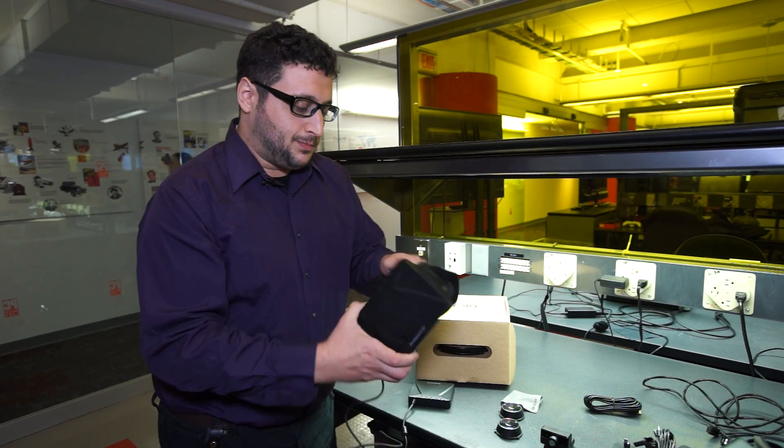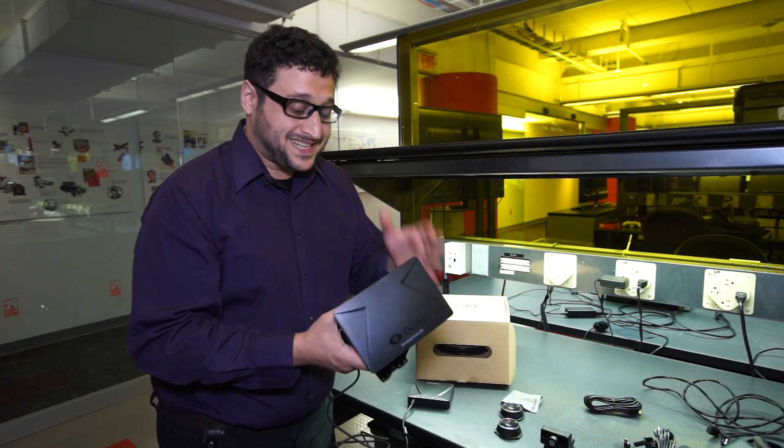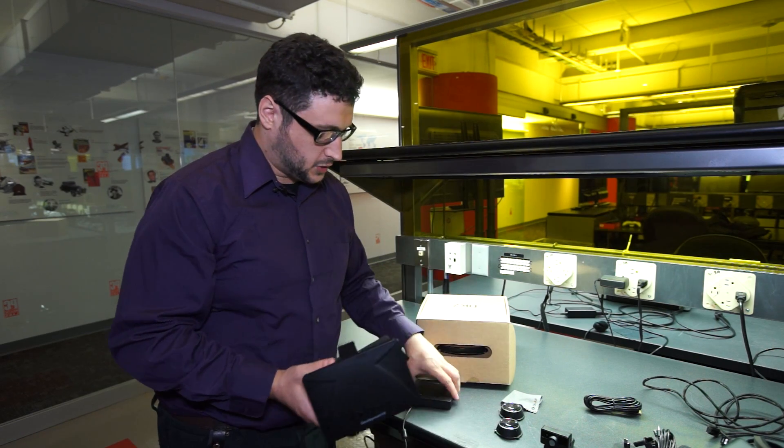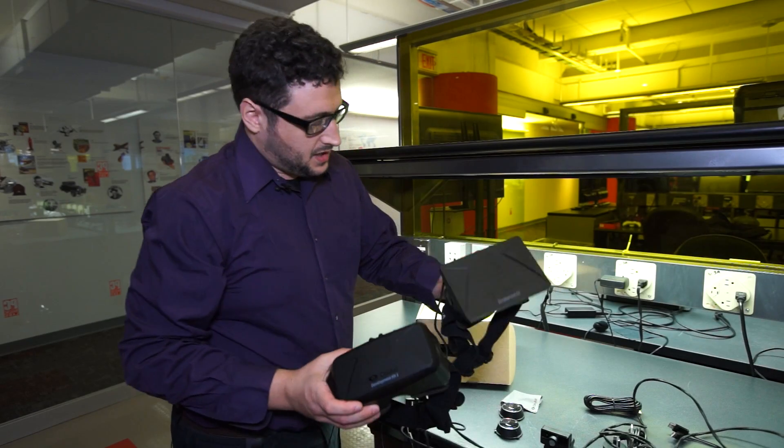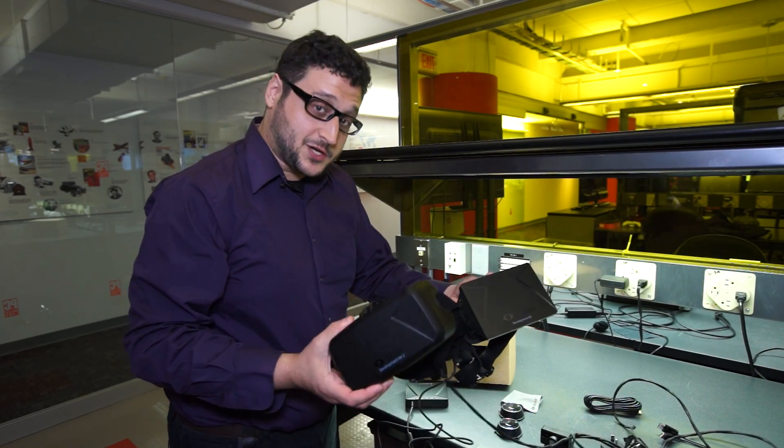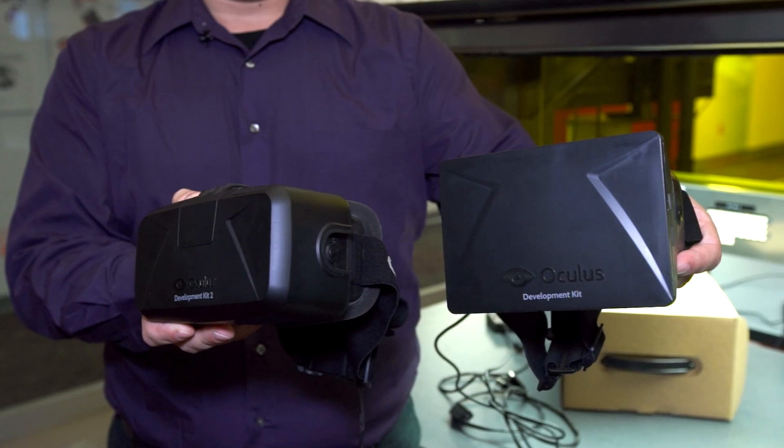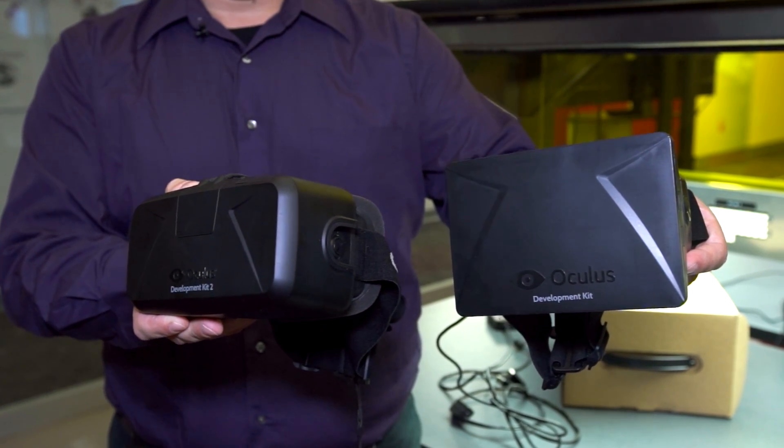A much more blocky, square, slightly thinner and lighter headset because most of the electronics are in the box. And compared to the DK2, this looks smaller. This is actually heavier and has slightly more volume, but it's a much sleeker design compared to this one.